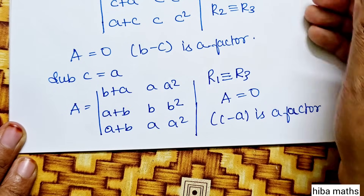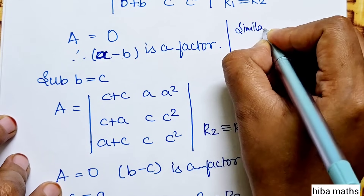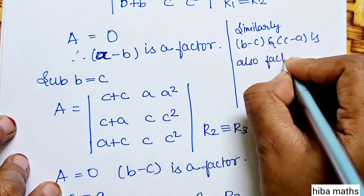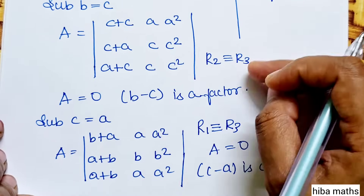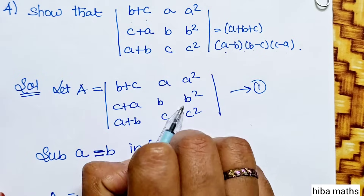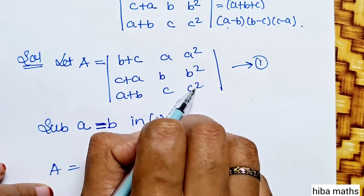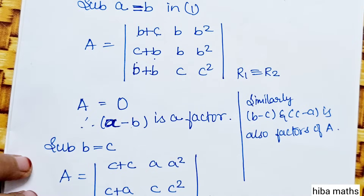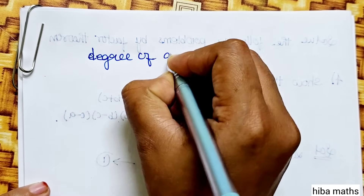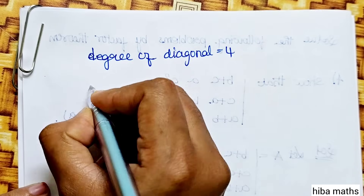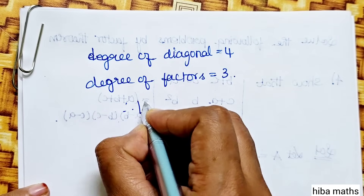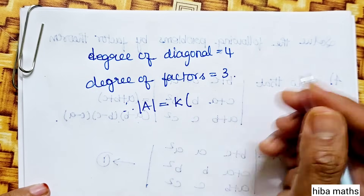So a minus b, b minus c, and c minus a are all factors of A. Now check the degree: the diagonal entries contribute degree 2, 1, and 1, giving total degree 4. The right-hand side a·b·c times a minus b, b minus c, c minus a is also degree 4. So the determinant equals k times a·b·c times a minus b times b minus c times c minus a.